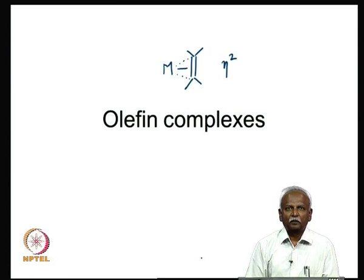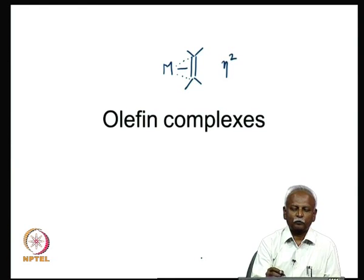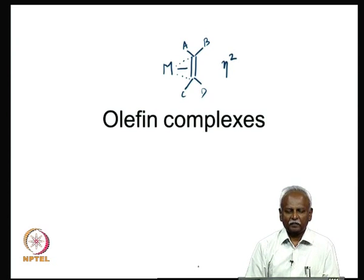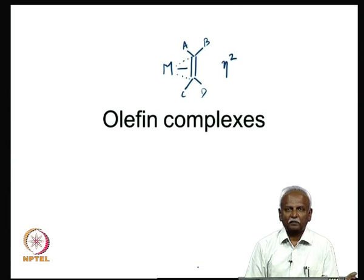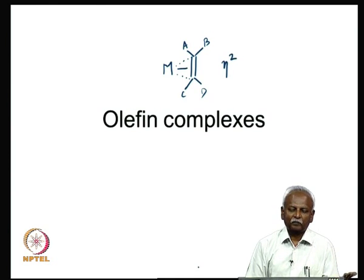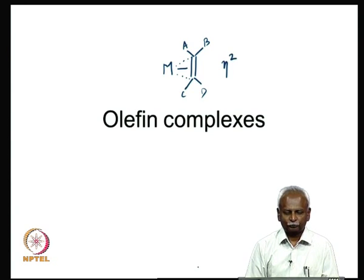In these systems, the olefin — if you consider the 4 atoms bonded to the olefin, labeled A, B, C, and D — if A, B, C, D and the 2 carbons are in a plane, then the metal is in a position below that plane. So the metal itself is in a plane below the plane containing the 4 atoms A, B, C, D and the 2 carbons which are interacting with the metal.